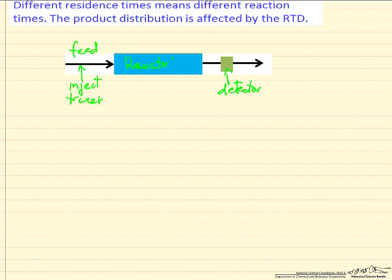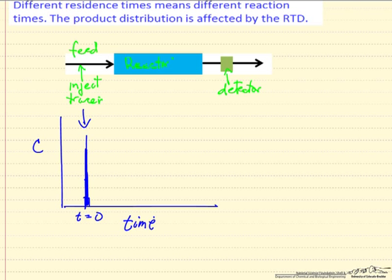And so if we do this, what do we expect the behavior to look like at the outlet? So here's the idea. We inject the tracer, so the injected tracer looks like a very narrow pulse where I'm plotting concentration of the tracer as a function of time. We inject it in a very short time. And then at the outlet, we're going to see something that might look like this. So at the outlet detector, we're going to get some tracer that's spread out in time. And it's spread out in time because different molecules spend different times in the reactor.